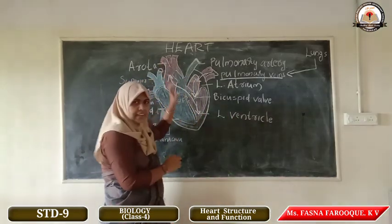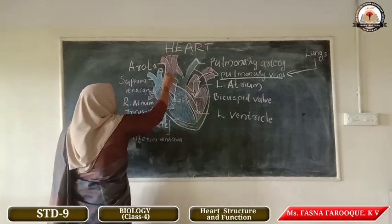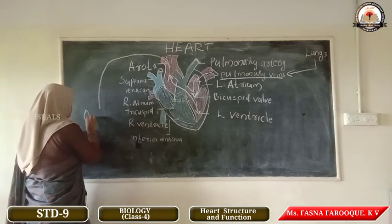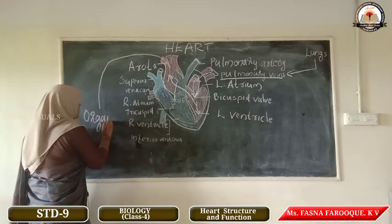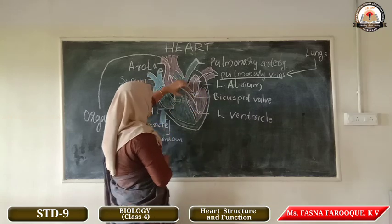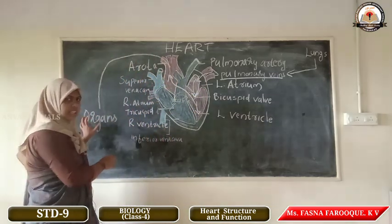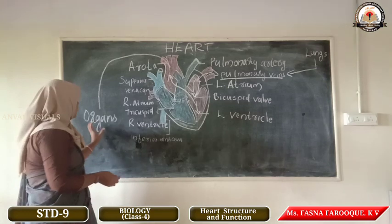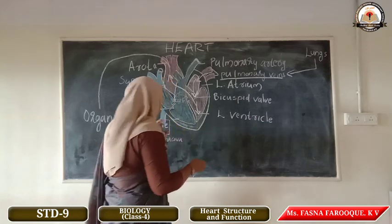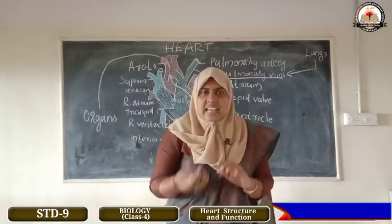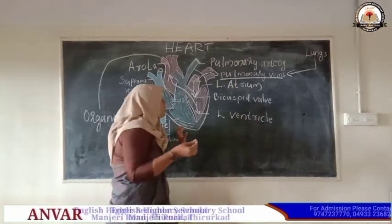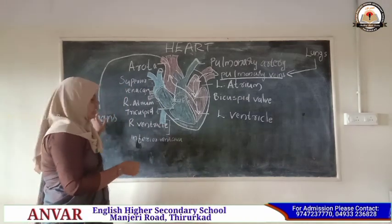When the ventricle contracts, the blood moves to the aorta. Through the aorta, the blood moves out to the different organs of the body. The oxygenated blood is carried through the aorta to different organs. The cells of the organs absorb the oxygenated blood, and the blood becomes deoxygenated.